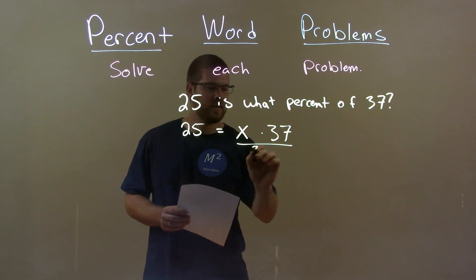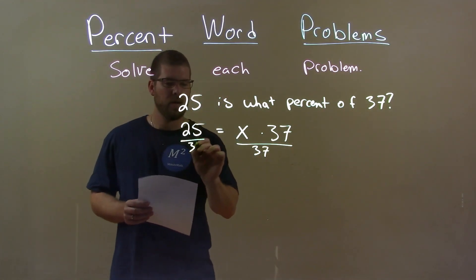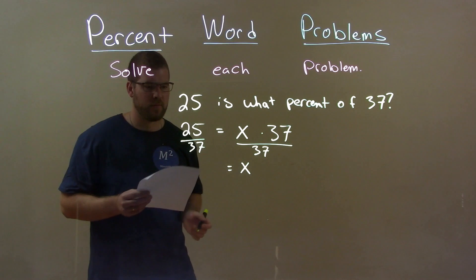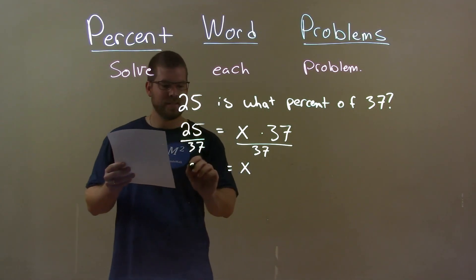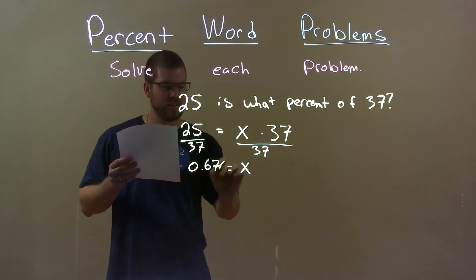So opposite of multiplication is division. Divide 37 to both sides. We get X by itself on the right. On the left we have 0.676.